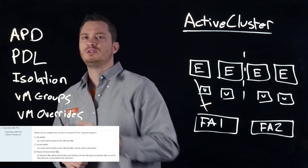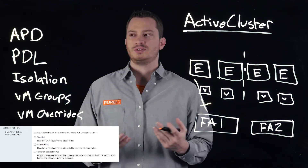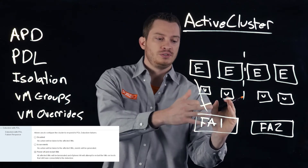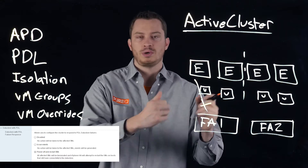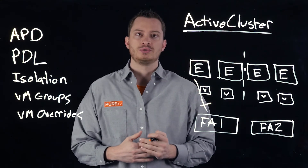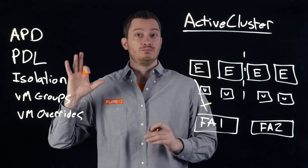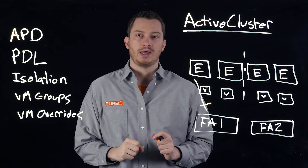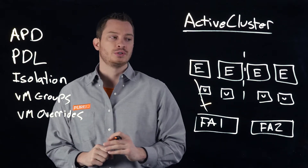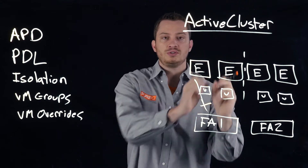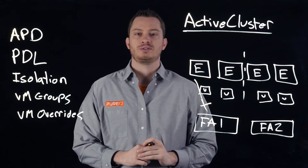There's also Permanent Device Loss (PDL). This is a very similar state to All Paths Down, but it's a permanent state. This usually means that a volume has been disconnected from the array — someone has deleted the volume or removed it from connection to that host. The array can inform VMware that the volume has been removed — do not expect it to come back. vSphere HA can also respond to PDL situations. If it's been removed from these hosts on one side but the other array still has it, vSphere HA can fail over any affected virtual machines to that side.